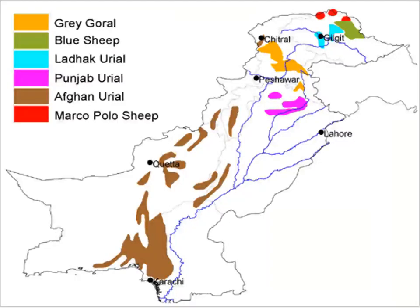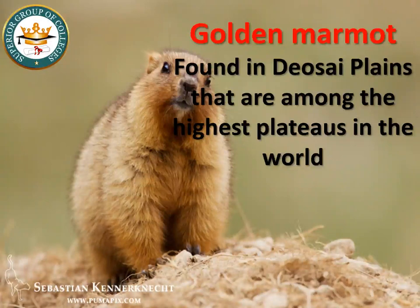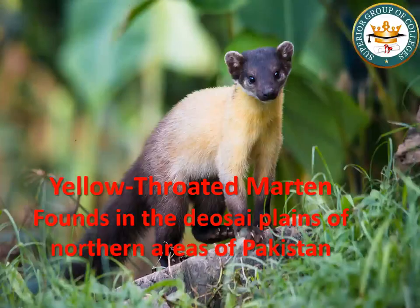On the map, red spots in the upper northern areas of Pakistan show the Marco Polo sheep distribution. Golden marmot is present in Deosai Plains, which are high altitude regions of Pakistan and among the highest plateaus in the world. Next, Yellow-throated marten is also present in the Deosai Plains in the northern high altitude areas of Pakistan.